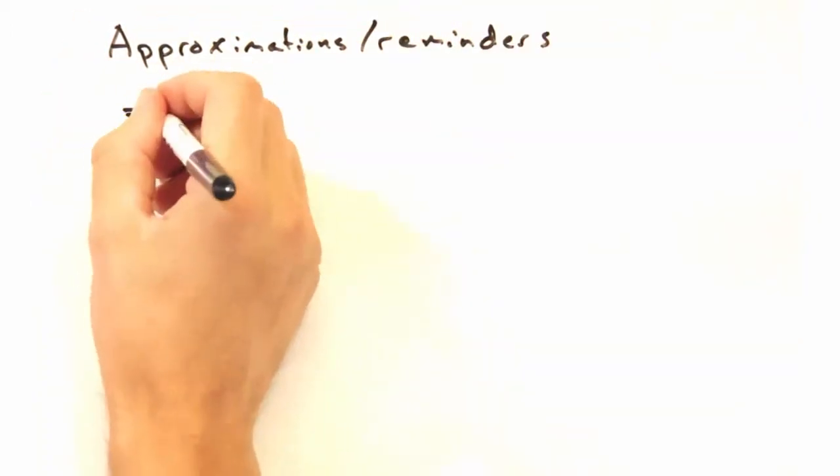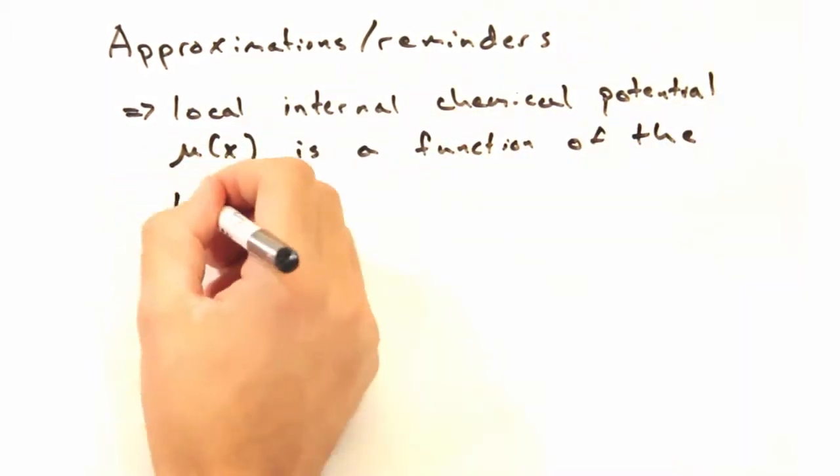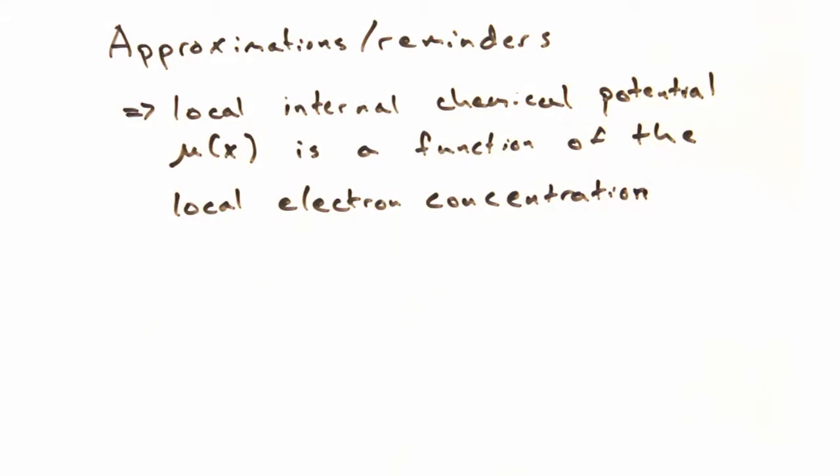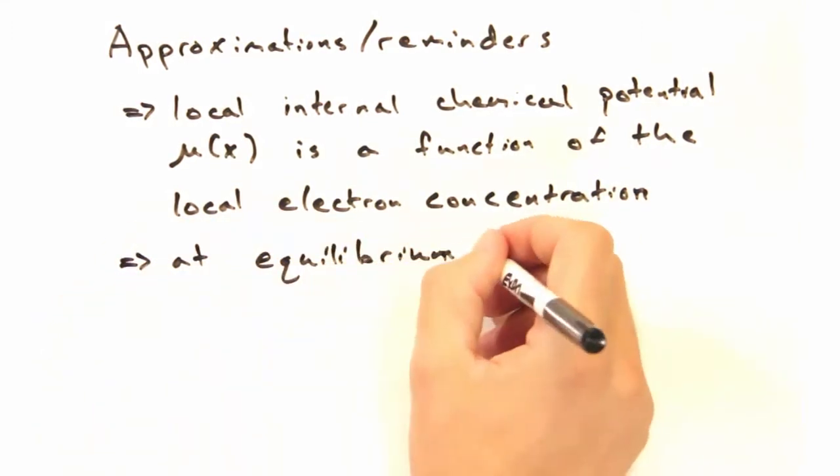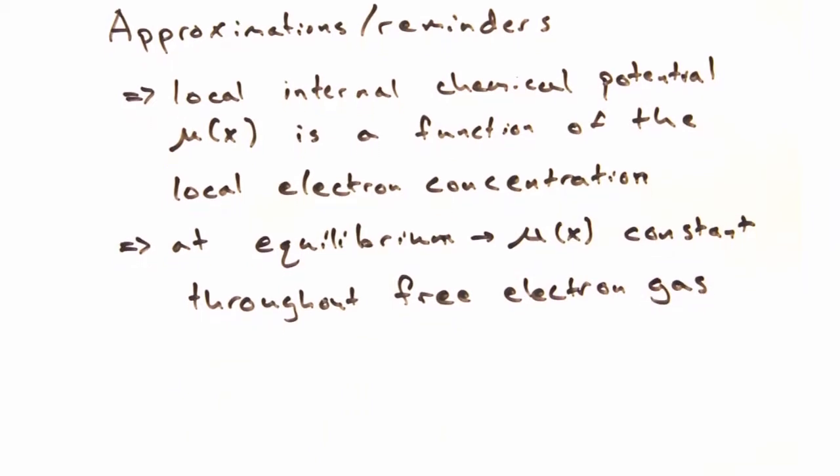Let's start by invoking that the local internal chemical potential is a function of the local electron concentration, n. Additionally, we know that at equilibrium, the chemical potential is constant throughout this free electron gas.